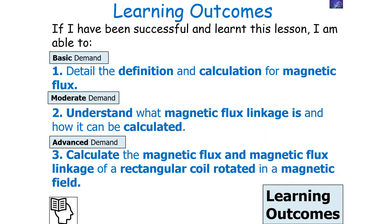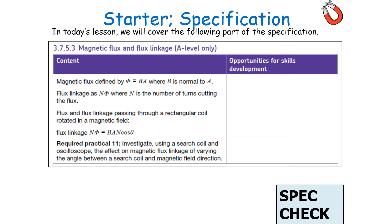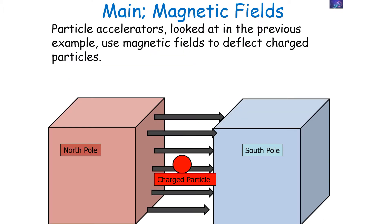If we're successful in today's lesson, we can detail the definition and calculation for magnetic flux, understand what magnetic flux linkage is and how it can be calculated, and then calculate the magnetic flux and the magnetic flux linkage of a rectangular coil rotated in a magnetic field, which falls into the AQA A-level physics specification in the magnetic field section: magnetic flux and flux linkage.